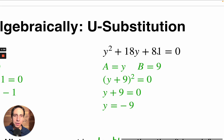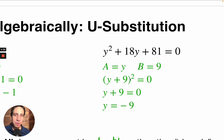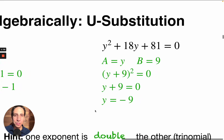Look at this. We've got a perfect square here and a perfect square here, and we multiply them together and double it to get the middle term. So I choose a equals y (the square root of y squared) and b equals 9 (the square root of 81), giving us a plus b squared — that's the perfect square trinomial formula. Taking the square root of both sides, we get y plus 9 equals plus or minus 0, which means y equals negative 9 — the only solution.